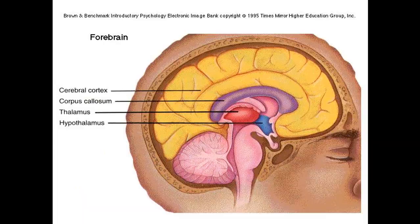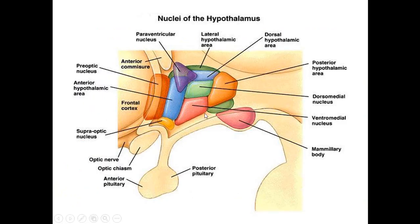Most ADH is produced from the supra-optic nucleus, and less from the paraventricular nucleus. After production from these two areas, it moves down — follow my cursor — and is stored in the posterior pituitary. Another very important hormone is also stored there: oxytocin. Keep in mind that oxytocin and ADH are structurally very close to each other, and some of their functions are also overlapping. So the posterior pituitary is the storehouse for both ADH and vasopressin.